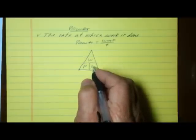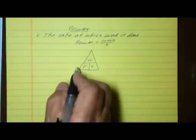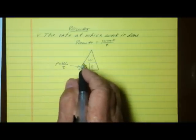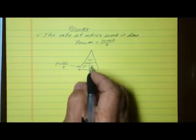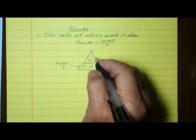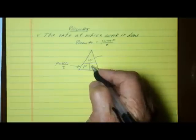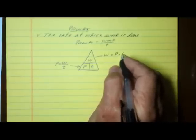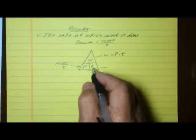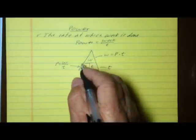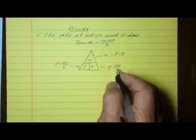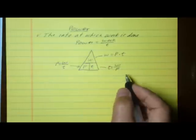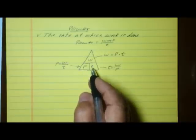Power P equals work W divided by time T. If we want to solve for power, power equals work divided by time. If we want to solve for work, work equals power times time. And we can also solve for time: time T equals work divided by power.